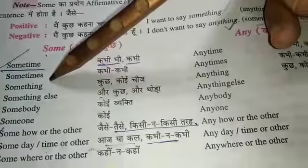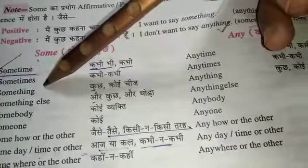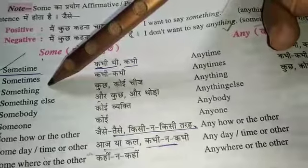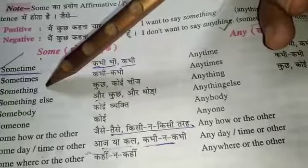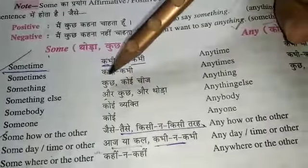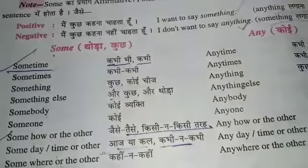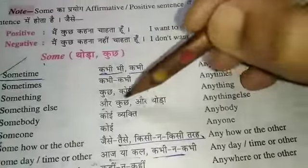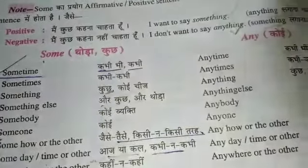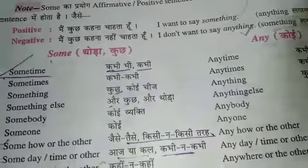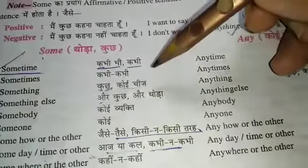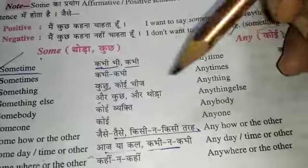Something — she gave me something hot to drink. Usne mujhe kuchh garm cheez peene ke liye diya. We are using kuchh here — ya koi cheez garm peene ke liye diya.